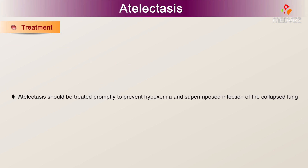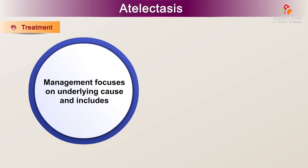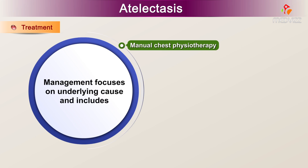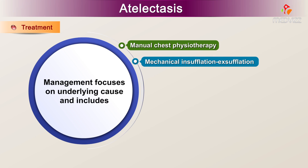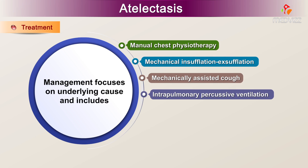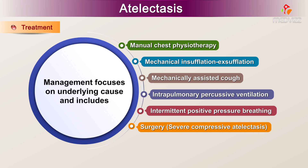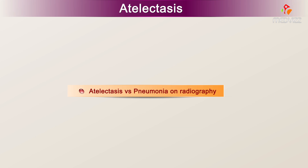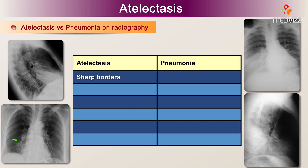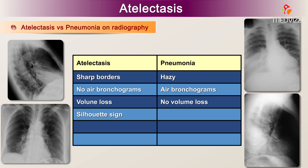Treatment: Atelectasis should be treated promptly to prevent hypoxemia and superimposed infection of the collapsed lung. Management focuses on the underlying cause and includes manual chest physiotherapy, mechanical insufflation-exsufflation, mechanically assisted cough, intrapulmonary percussive ventilation, and intermittent positive pressure breathing. Surgery may be necessary for severe compressive atelectasis. Atelectasis versus pneumonia on radiography: atelectasis has sharp borders whereas pneumonia has hazy borders; atelectasis has no air bronchograms while pneumonia shows air bronchograms; atelectasis causes volume loss and a silhouette sign, while in pneumonia there is no volume loss but a silhouette sign may be present. Both have increased density, but atelectasis shows rapid changes over time while pneumonia shows only slow changes.